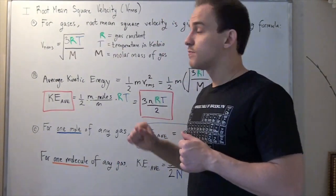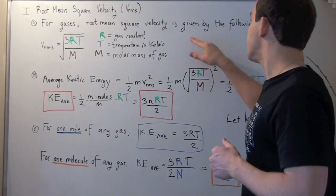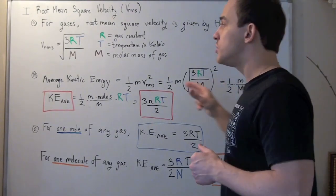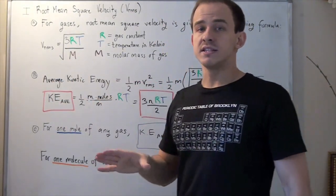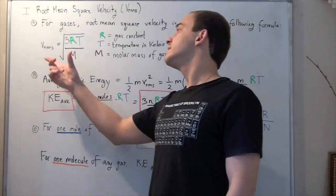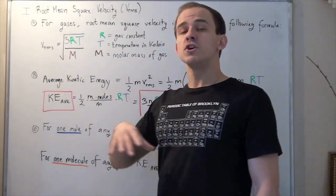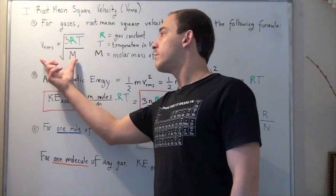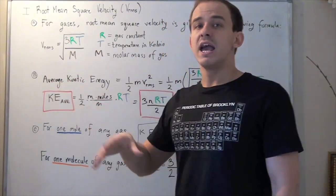Now in gases, root mean square velocity is given by the following formula, which can be derived using calculus. I will spare you the calculus and simply give you the formula. But if you're curious about where this formula comes from, leave a comment and I'll show you.